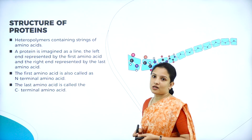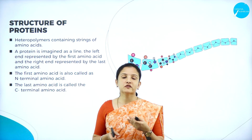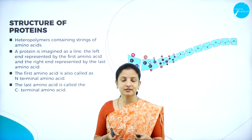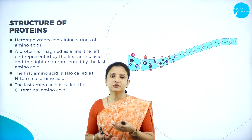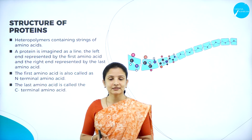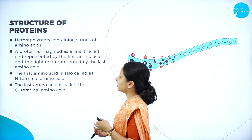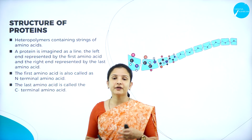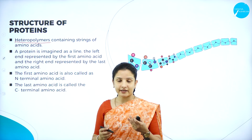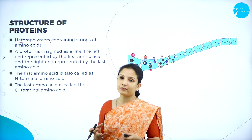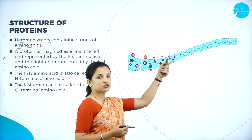In today's session, we shall study the structure of protein in detail — the primary, secondary, tertiary, and quaternary structures — and also the different types of bonds that link the monomer units in proteins, polysaccharides, and nucleic acids. We shall start with the structure of protein. Proteins are made up of chains of 20 different amino acids and are therefore called heteropolymers, arranged in a linear form.